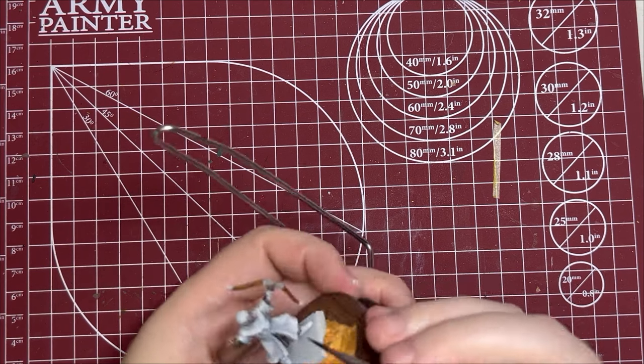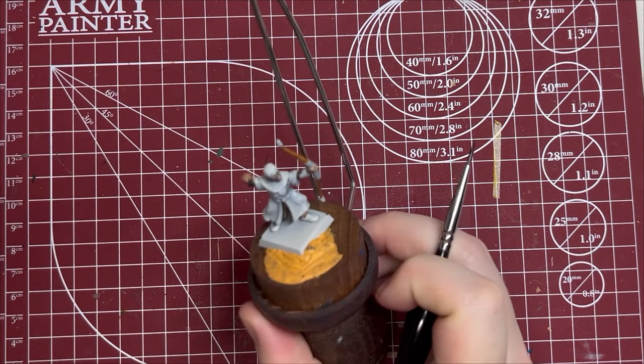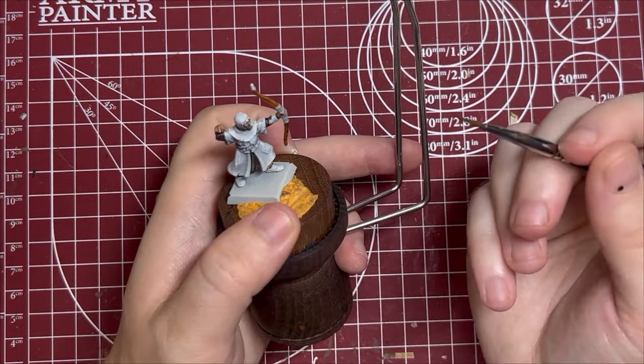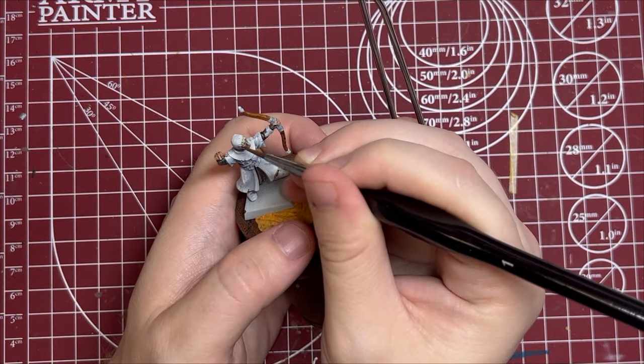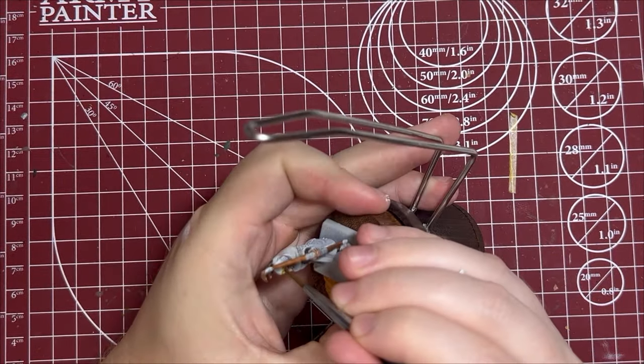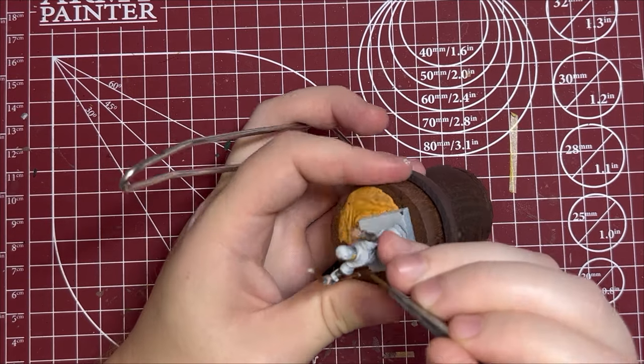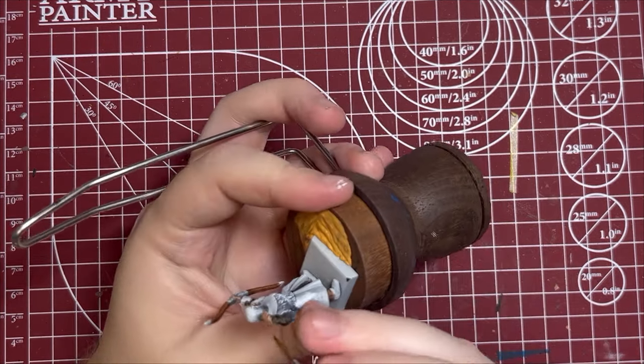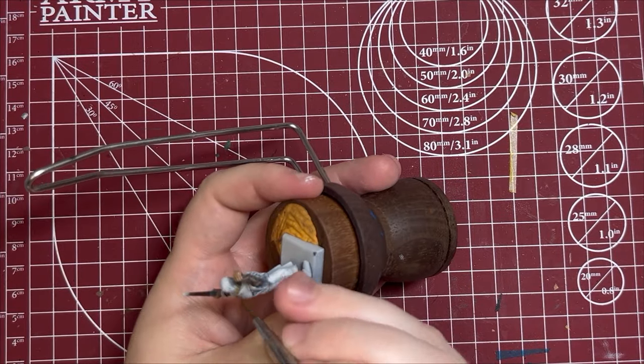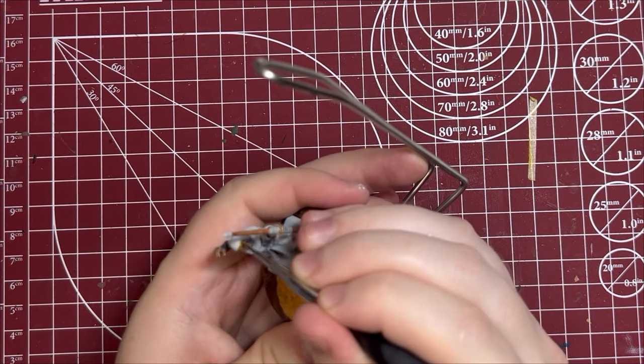All right and next I'm going to do the hair and this is actually going to be a two-step process. I'm going to go over it with Iyanden Yellow, another GW paint, and then I'm going to go over it again with a Skeletal Horde which will tone it down a little bit and make it look a more natural blonde. And then I'm going to go over it with just a little bit of Skeletal Horde now that that's had a chance to dry.